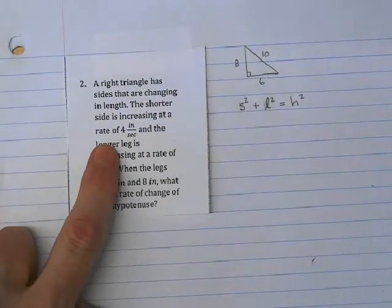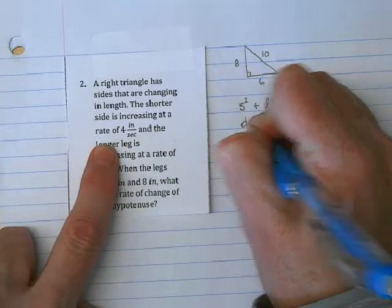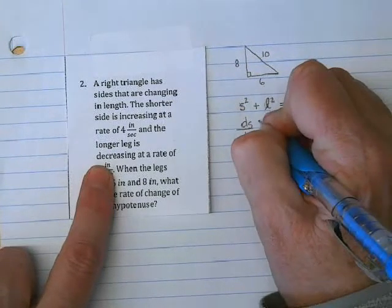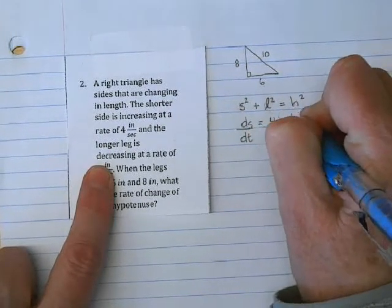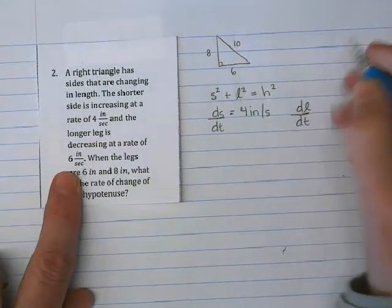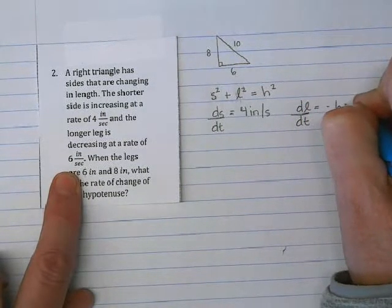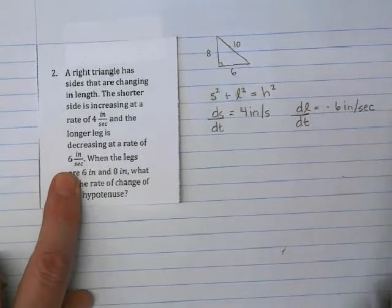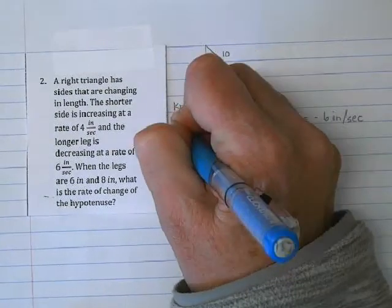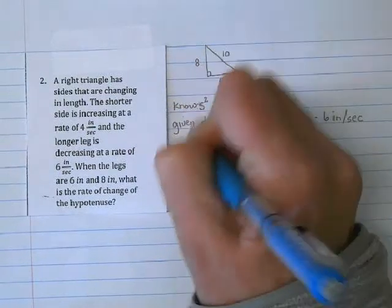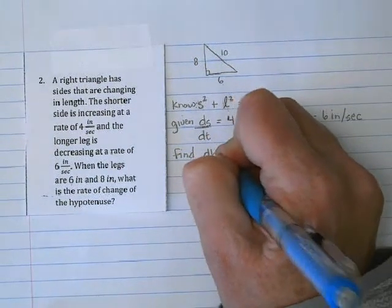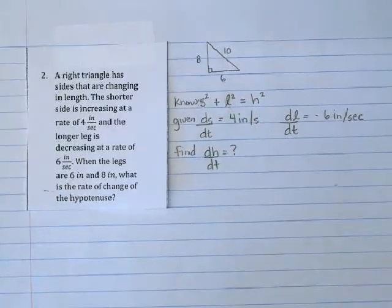Let's see what they gave us. The shorter leg is increasing at a rate, so that's ds/dt, of 4 inches per second. The longer leg, dl/dt, is decreasing at a rate of 6 inches per second. And then the thing that we want to find, here's what we know, here's what we were given, and here's what we want to find: what is the rate of change of the hypotenuse?